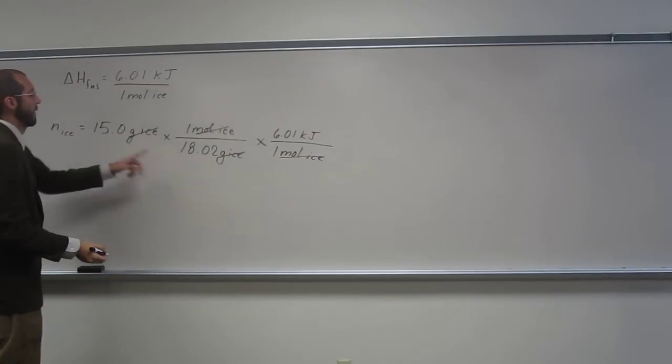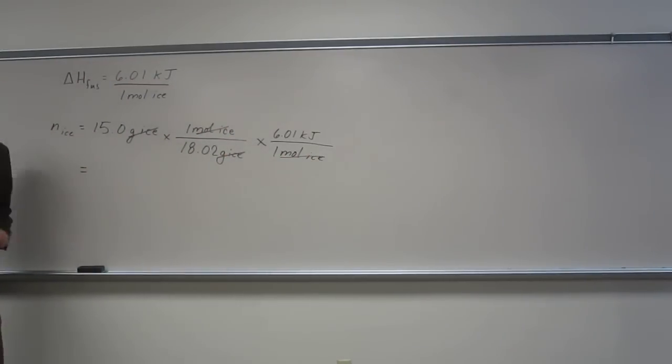But we've got however many grams of ice, or however many moles of ice. So let's figure it out. So 15 divided by 18.02. So we've got 0.8324 moles of ice, right? And then multiply that by 6.01.